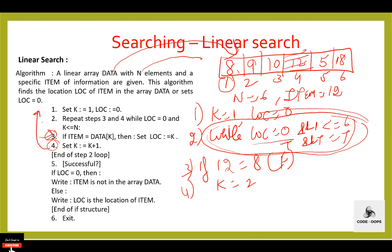Control transfers back to step 2: repeat steps 3 and 4 while loc equals 0 and k is less than or equal to n. loc equals 0 and k is 2, and 2 is less than or equal to 6, so the condition is true. Execute step 3: item is 12 and data[k] is 9 — 12 equals 9 — condition is false. Then step 4: k equals k plus 1, k becomes 3.